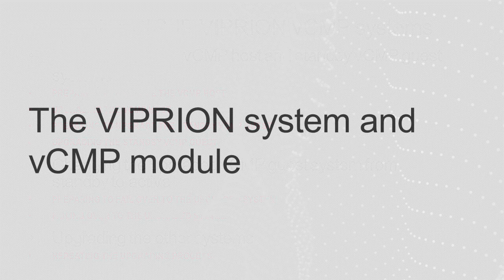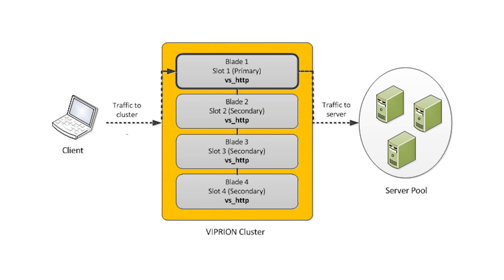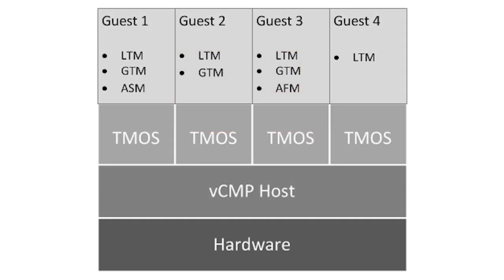The Viprian system and VCMP module. The Viprian system is a hypervisor. The system includes multiple blades that work together as a cluster to process application traffic. A Viprian cluster is the group of active blades in the Viprian chassis. The Viprian system can run the VCMP module, which you can provision on Viprian and other platforms. VCMP allows you to run multiple instances of BigIP software on the same platform. A VCMP host is the system-wide hypervisor that makes it possible for you to create and view BigIP instances known as guests. A VCMP guest is an instance of BigIP software that you create on the VCMP system, enabling you to provision one or more BigIP modules to process application traffic.